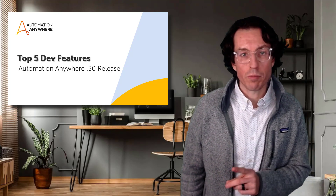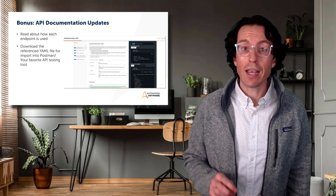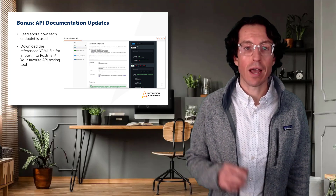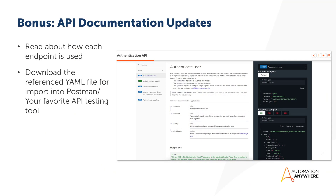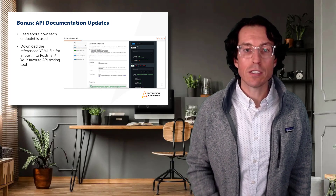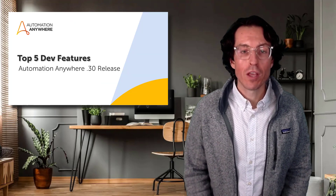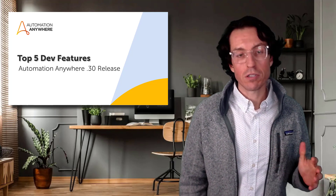As a bonus feature worth calling out: our API documentation on the docs portal has been totally updated and is way improved. The documentation in general has seen massive updates over the last couple of years, but this one in particular is much easier to understand and visualize than before. For those interested in digging into the control room API, there's no better place to start — link in the description. Huge shout out to the documentation team who have been seriously stepping it up.